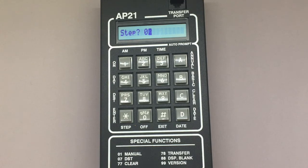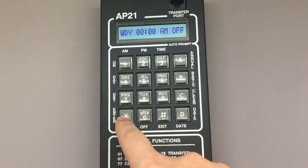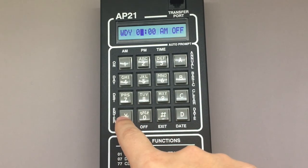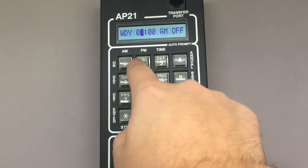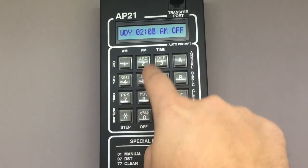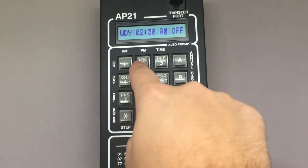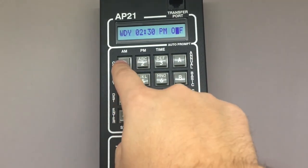So here we go. Star to select step 02. Star to select weekday. 02 star, 30 star, 2 for p.m., star, 1 for on, and star.